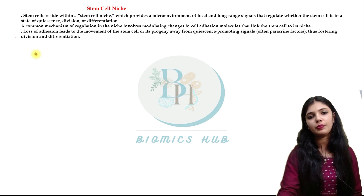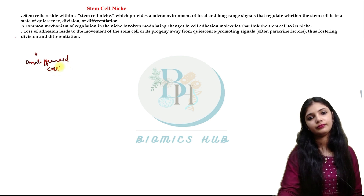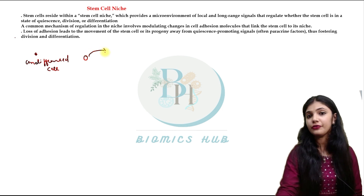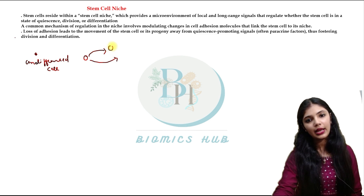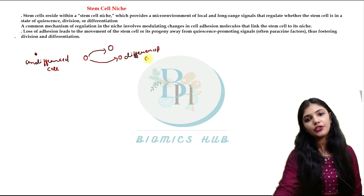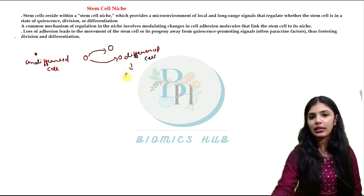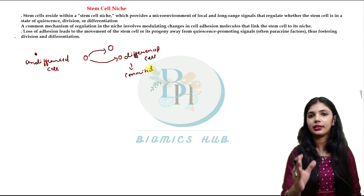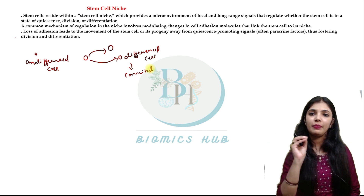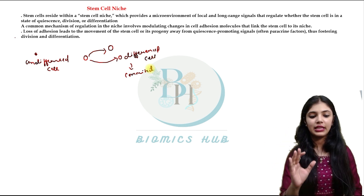The stem cell is an undifferentiated cell, and it has the property to divide. It was dividing asymmetrically as well as symmetrically. When the stem cell divides asymmetrically, it will make itself a cell and a differentiated cell — one differentiated cell. A differentiated cell means this cell has now committed to some fate; it has already decided that it will make neurons, it will make muscles — whatever the fate may be, it has been decided by the cell.